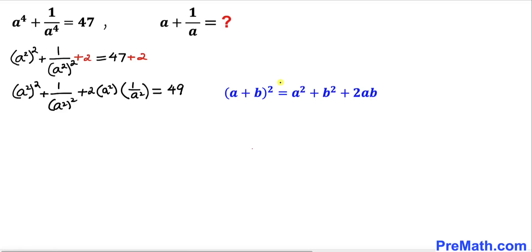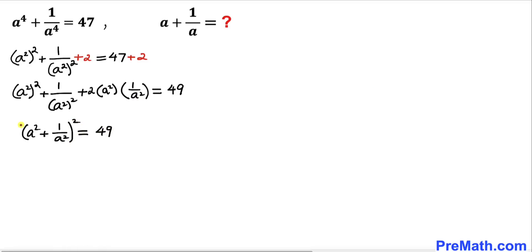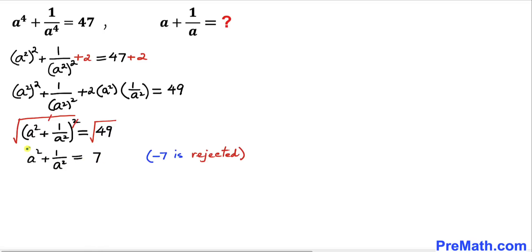Now let's recall the famous identity: a plus b, whole squared. The left hand side becomes simply a squared plus 1 divided by a squared, whole squared, equals 49 on the right hand side. Let's undo this square by taking the square root on both sides — the square and square root undo each other — so we get a squared plus 1 divided by a squared equals positive or negative 7. Since we are dealing with a squared terms, we keep only positive 7 and reject negative 7.